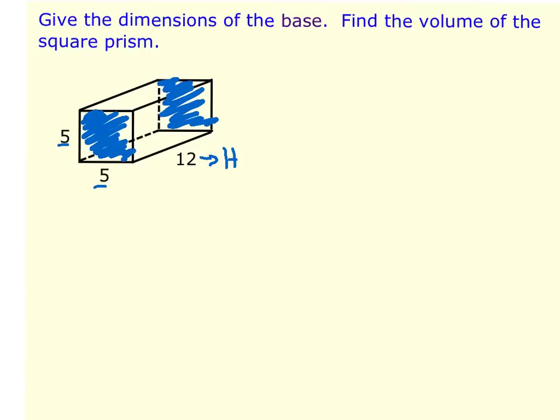So to find the volume of this prism, remember the formula is area of the base times the height. In this case, because it's a square, the area of the base is base times height, or if you want to think of it as side squared,